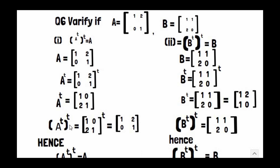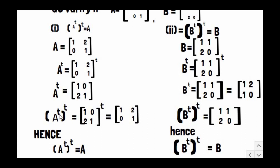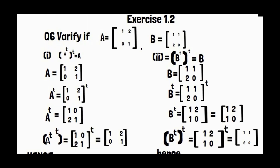The result [1, 2; 0, 1] is exactly equal to the original matrix A. Hence it is proved that (A^T)^T equals A.